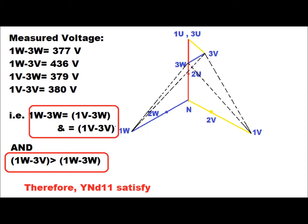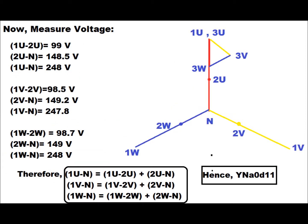Therefore the condition for YND11 is satisfied. We then measure the voltage between 1U and 2U — primary red phase to secondary red phase — which comes to 99 V; between 2U and N, which comes to 148.5 V; and between 1U and N, which is 248 V. We can see that the primary red-to-neutral voltage equals the sum of the primary-to-secondary red phase voltage plus the secondary red-to-neutral voltage.